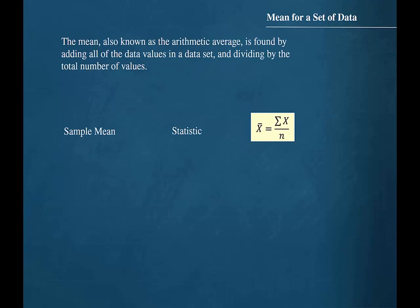The mean, also known as the arithmetic average, is found by adding all of the data values in a data set and dividing by the total number of values.